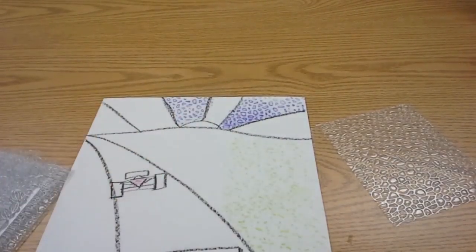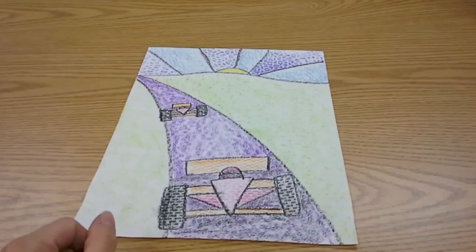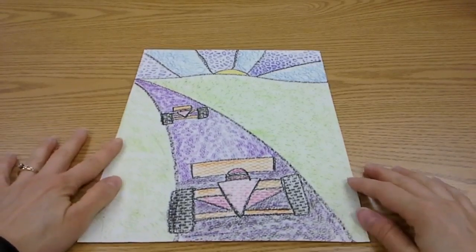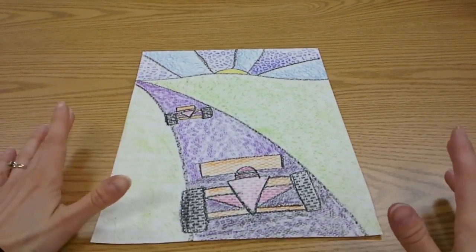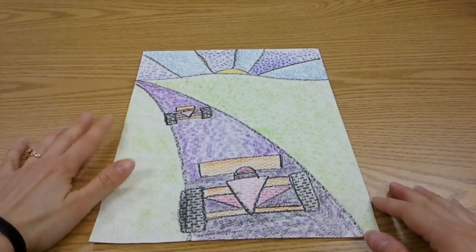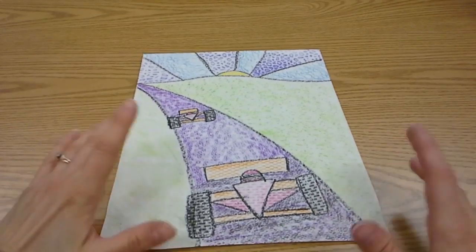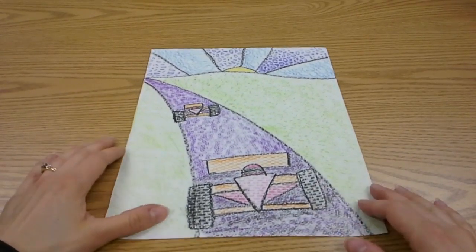And when your whole page is covered, you're done. And here is my finished race track. Since this picture is based on artist Romero Brito who used really bright colors, you can use any color you want when you're doing your picture.